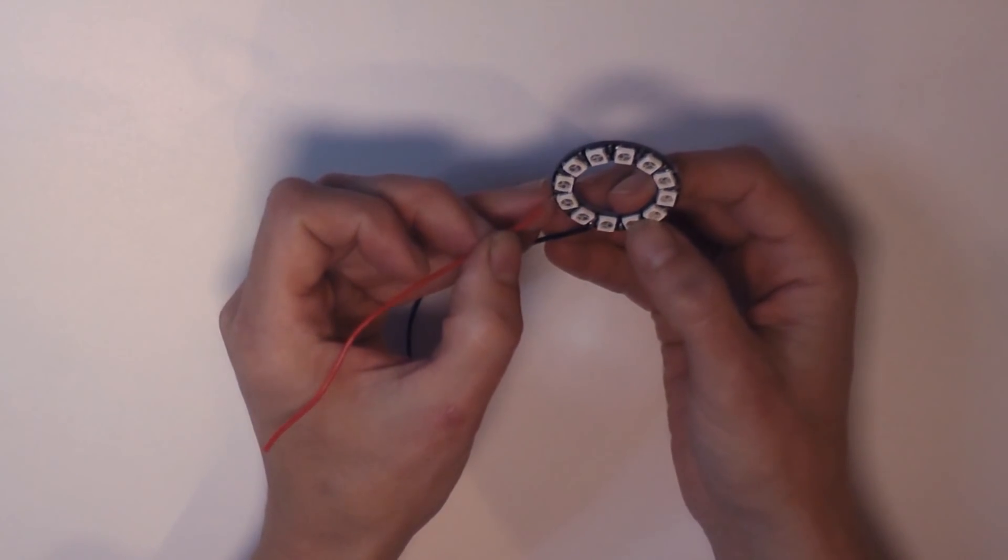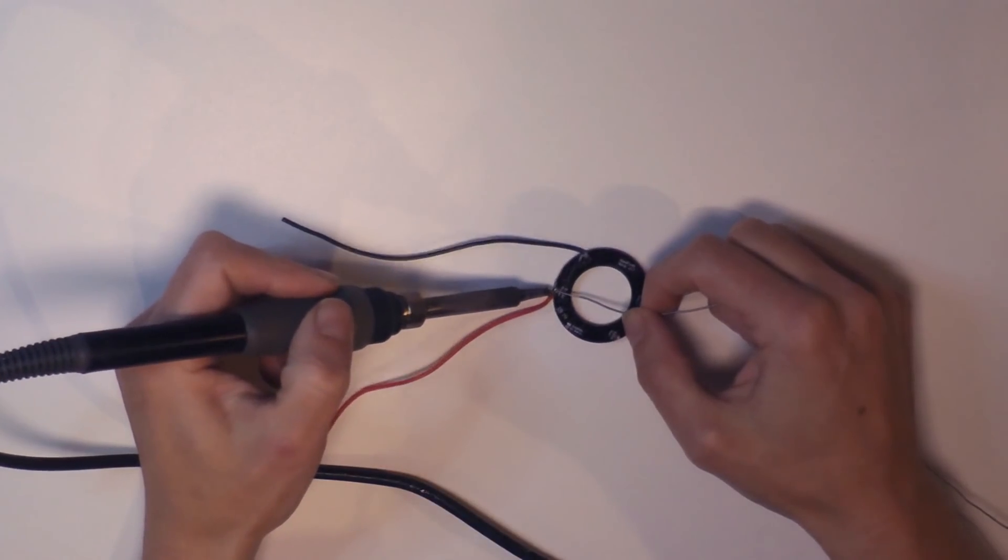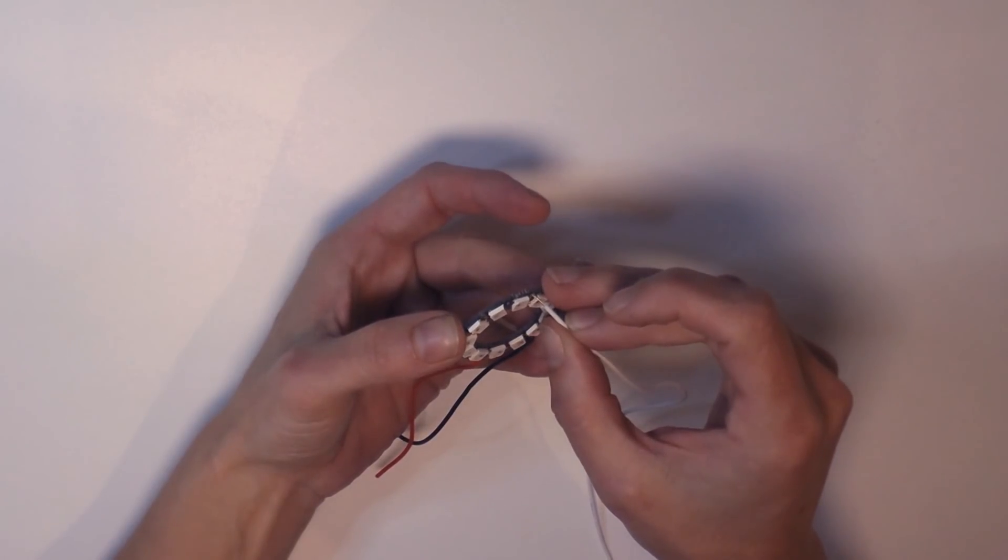Solder a black wire to the ground pin, a red wire to 5V, and a white wire to the in pin on your Neopixel ring.